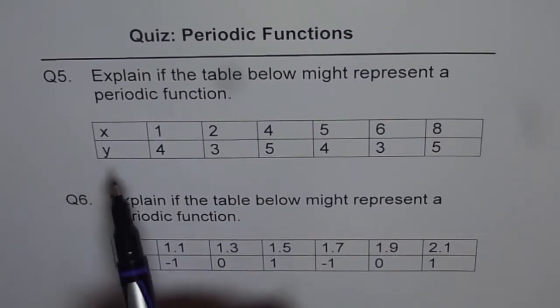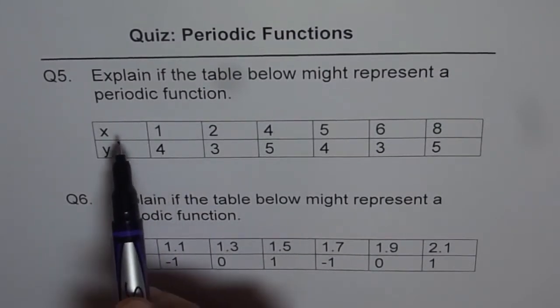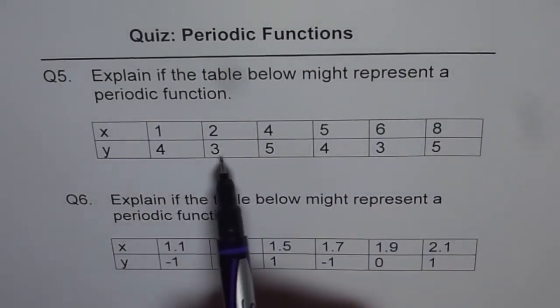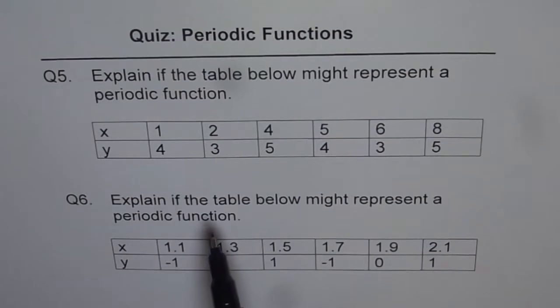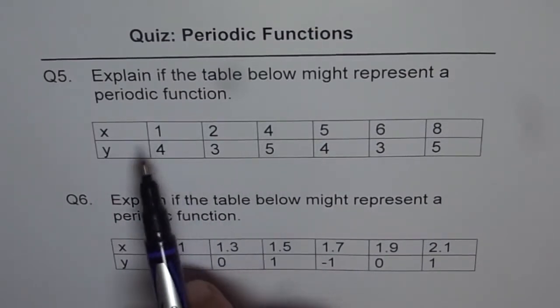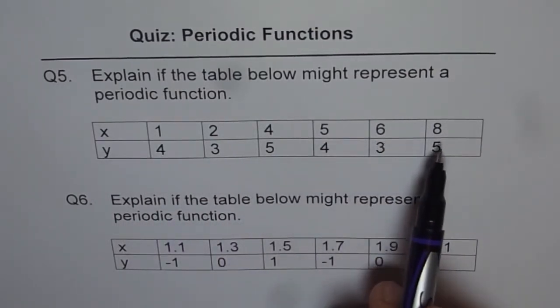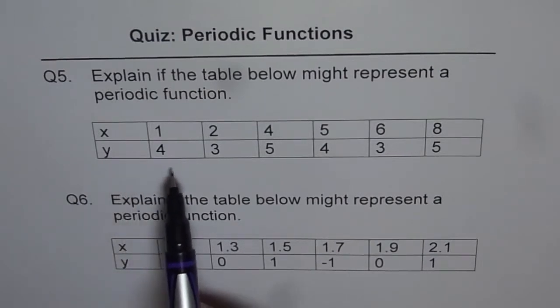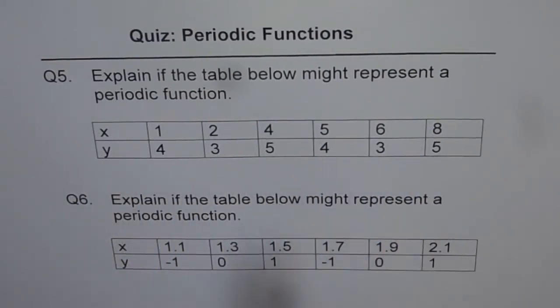So x and y values are given to us. x will represent the input and y is the value of the function, the output. Now for the inputs of one, two, four, five, six and eight, the outputs are four, three, five, four, three, five and so on.